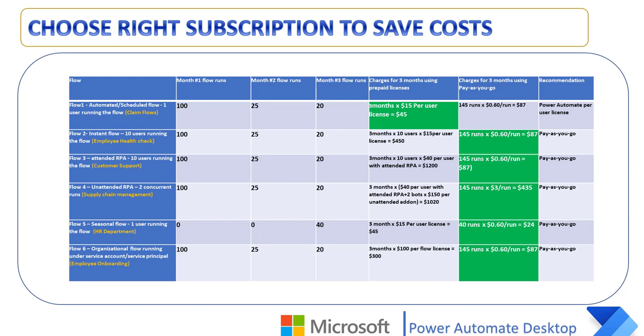For unattended flows, both parent and child flows will be charged. Now let's see how to choose the right subscription to save costs. Prepaid flows and pay-as-you-go flows can coexist in the same environment. Admins can understand usage patterns using Power Automate Admin Center reports and move users to prepaid licenses for optimal pricing. Pay as you go is optimal for seasonal flows or flows with fewer runs.